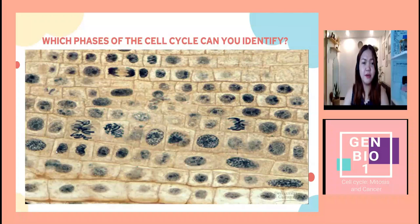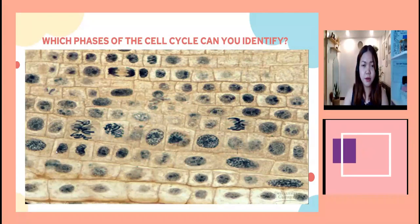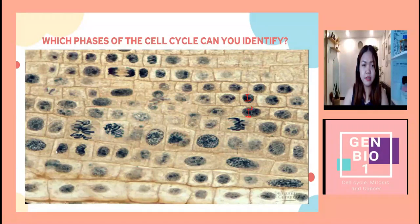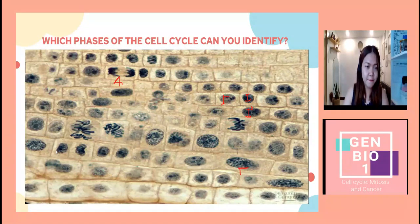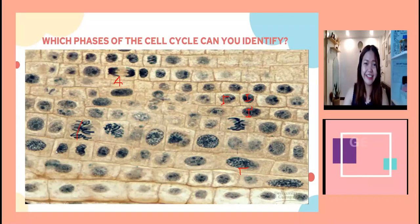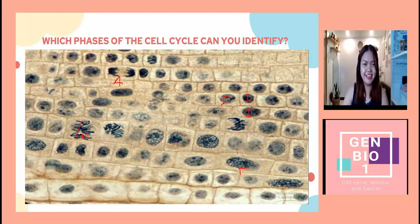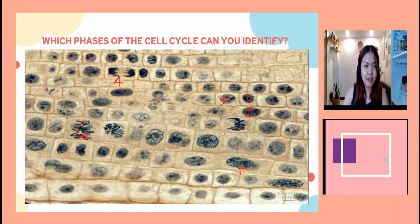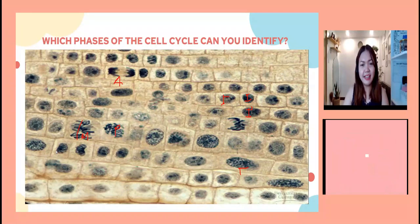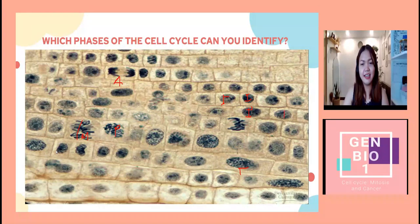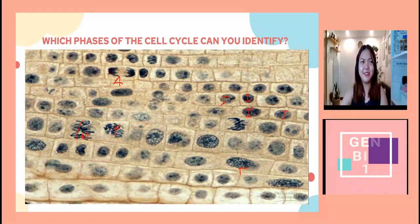Looking at an image of cells in various phases, most cells are in interphase because cells spend about 90% of their cell cycle in interphase. You can identify the anaphase — where chromosomes are being pulled apart — the telophase, the metaphase where chromosomes are aligned, and the prophase where chromosomes are condensing.